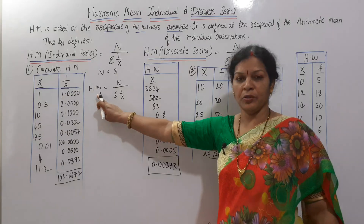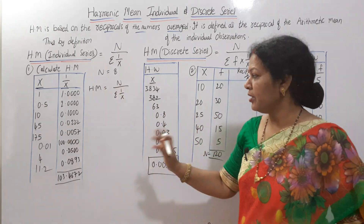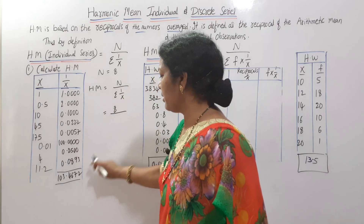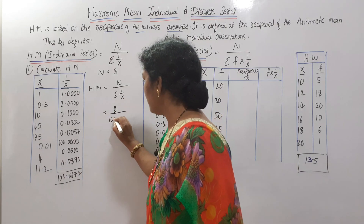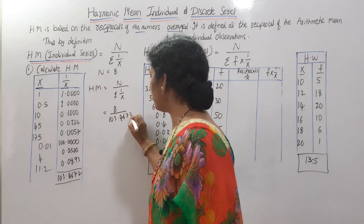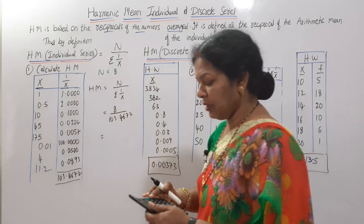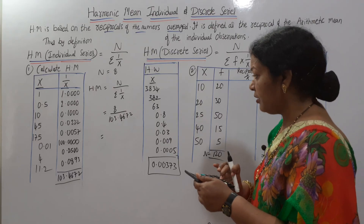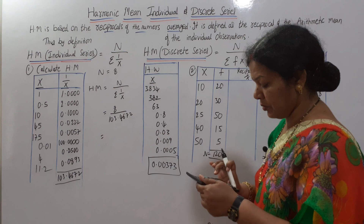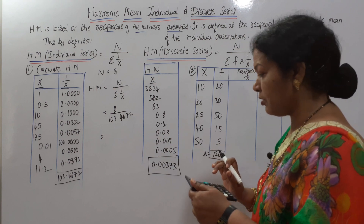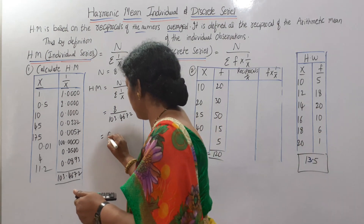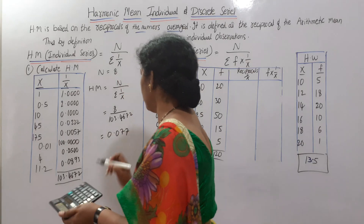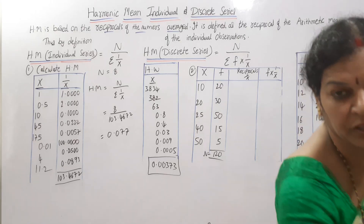Using the formula — harmonic mean equals n by sigma (1 by x) — we have n equals 8 and sigma (1 by x) equals 103.4672. So we calculate 8 divided by 103.4672, and the answer is approximately 0.077. This is the harmonic mean answer.